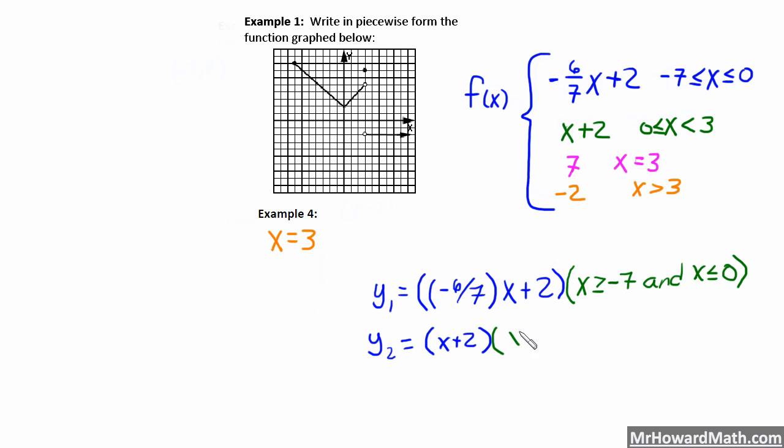So that was x greater than or equal to 0, and x is less than 3, close parenthesis around my domain. And I'll show you how to put all of this in in a minute. It's under the test menu in your calculator.